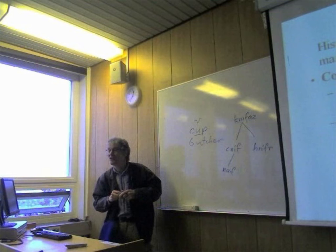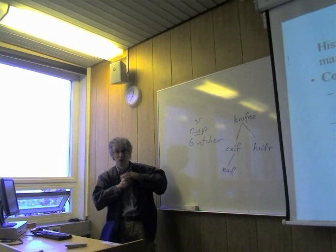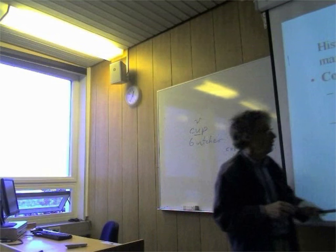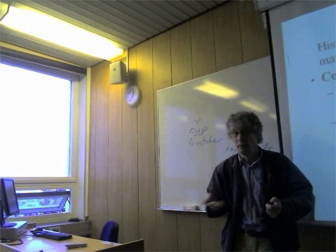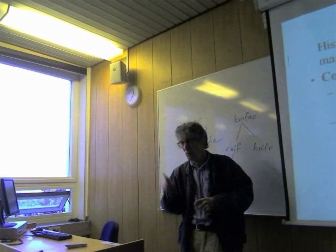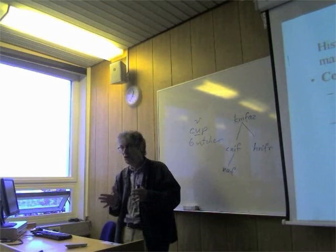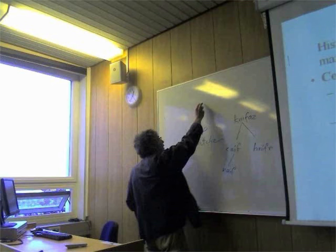One of the things which helps us understand dialects is English spelling, because it shows the pronunciation from 400 or 600 years ago. Never forget that the spelling shows us the actual pronunciation of Chaucer's time. So when you get a word like knife, with all the complicated rules - don't pronounce the K, and the final E makes the vowel long - those are horrible rules to learn.